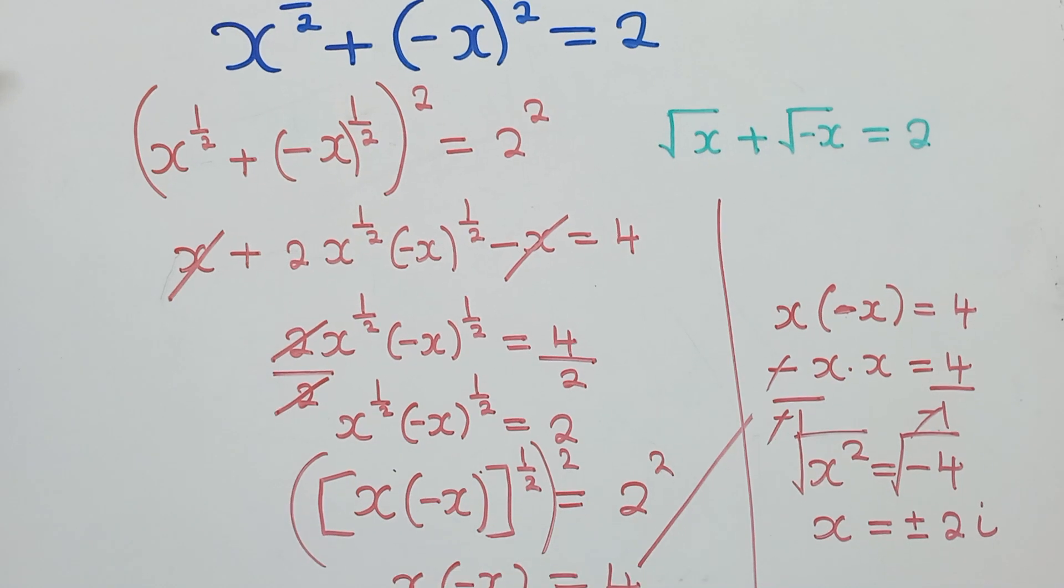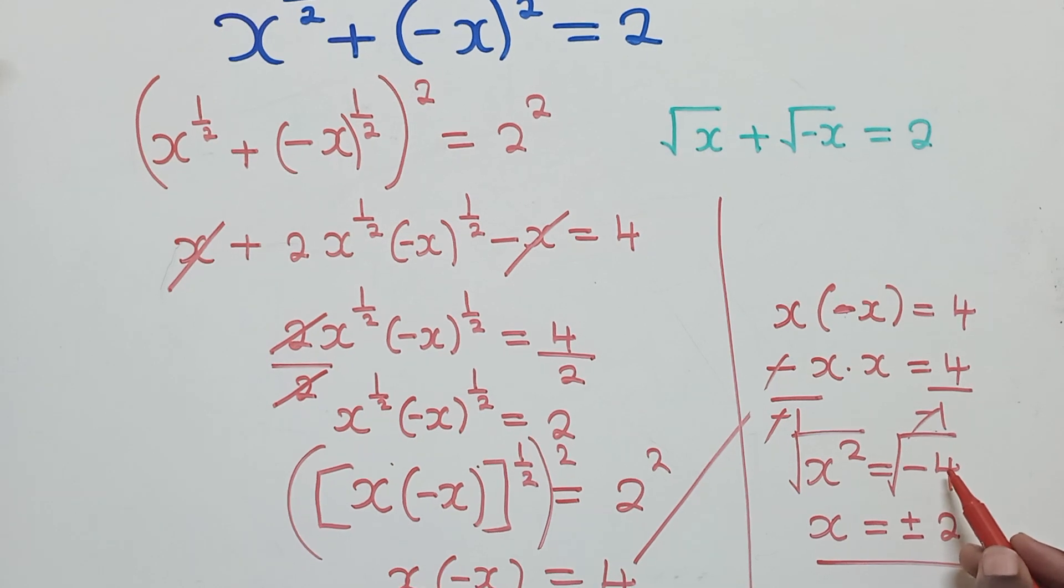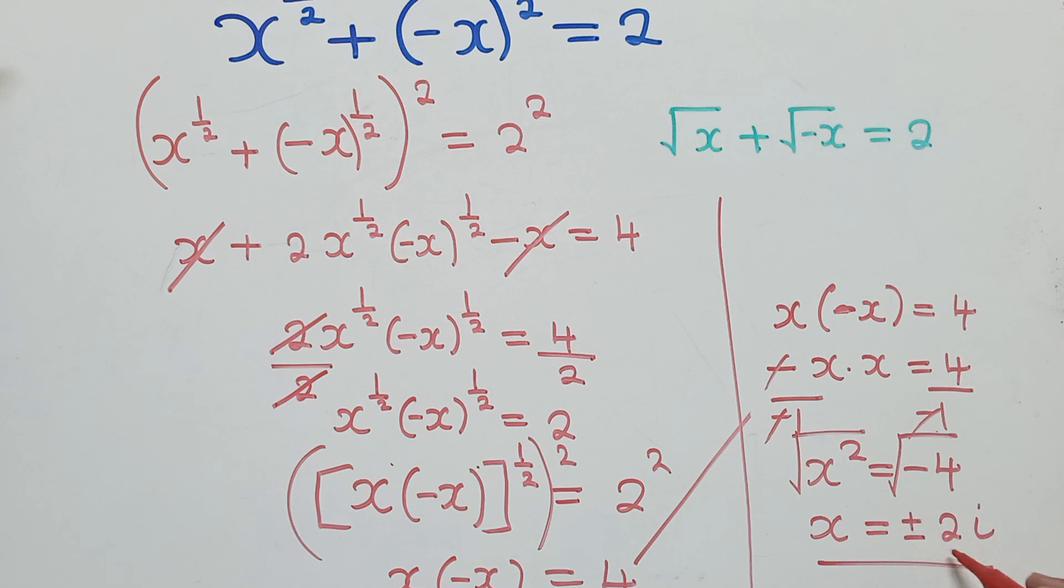It will give us a complex number. So if you punch square root of negative 4 on your calculator, depending on the calculator that you are using, some calculators will give you math error because you are dealing with a complex number. So this is a complex number and this is the solution that you get.